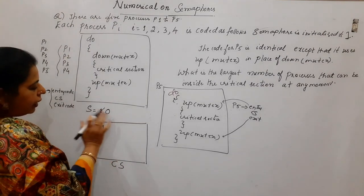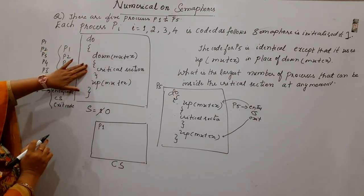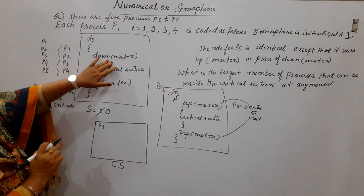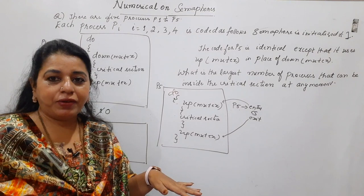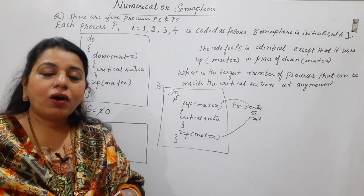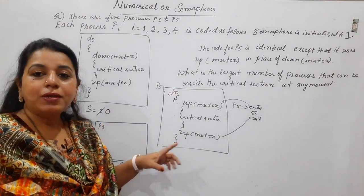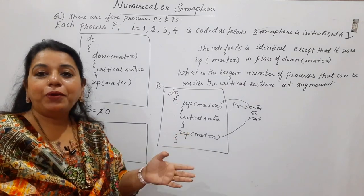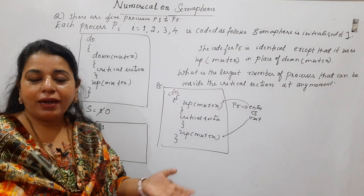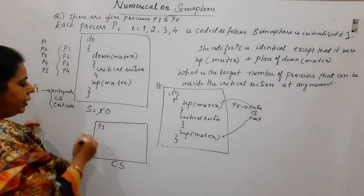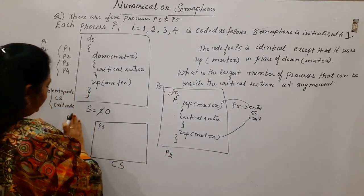We wanted more number of processes. The current value of semaphore is 0. P2 wants to enter into the critical section. P2 should also follow the same code — P2 has to perform the down operation on mutex. Please recall what the definition for the down operation on the semaphore is: while S less than or equal to 0. Here, the condition is true because the current value of S is 0. Zero less than or equal to 0 is true, meaning P2 now cannot enter into the critical section — that while loop condition became true and it is stuck. So P2 is in the block list.